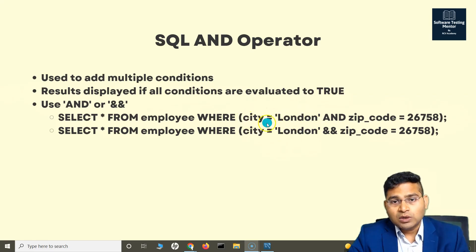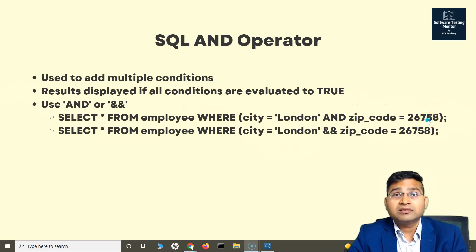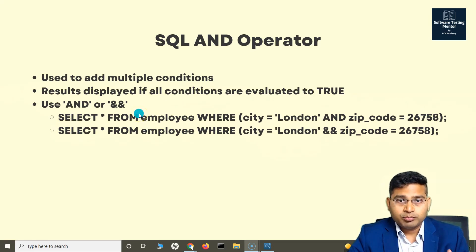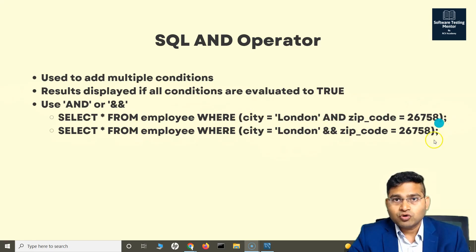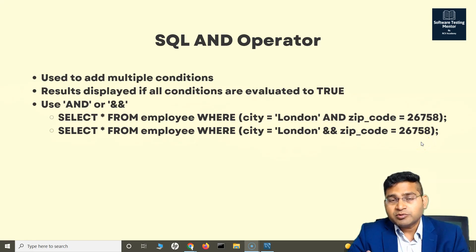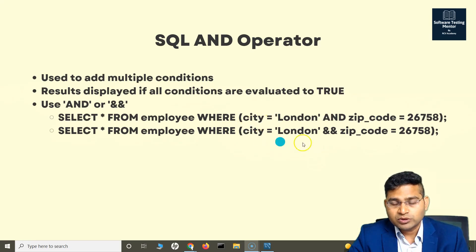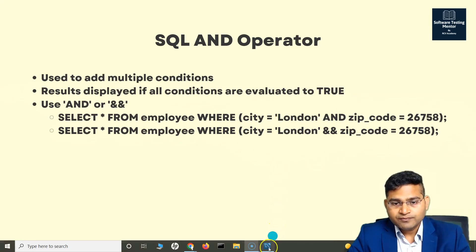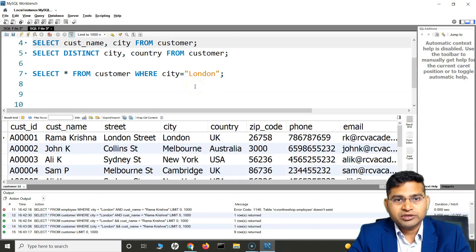So the first condition — city is equal to London — gets evaluated. If it returns true, then the next condition gets evaluated. If that is also true, then the result is displayed. You can use either AND or double ampersand. The brackets are optional, but using them makes your query look neat and clean, clearly showing what you are evaluating within the overall WHERE condition.